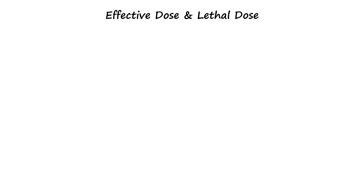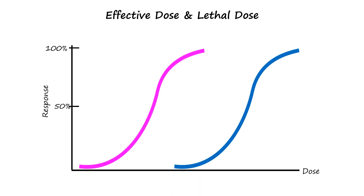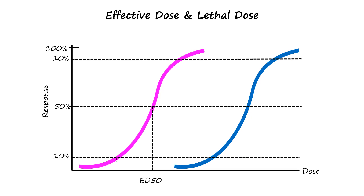Apart from the slope of the dose-response curve, there are important concepts like effective dose 50 (ED50) and lethal dose 50 (LD50) to assess the safety of a drug. The effective dose is the dose of a drug that produces the desired therapeutic effect in a specific percentage of a population — for example, ED50 is the dose at which 50% of the population experiences the intended effect. Likewise, ED10 and ED90 describe the therapeutic effect achieved in 10% and 90% of the population respectively. The lethal dose is the dose that causes death in a specific percentage of a population — for instance, LD50 is the dose at which 50% of the population dies due to the drug's effects. There are also lethal dose 90 and 10.